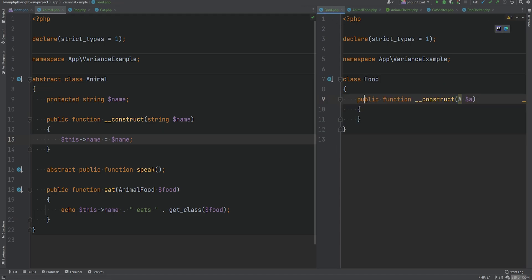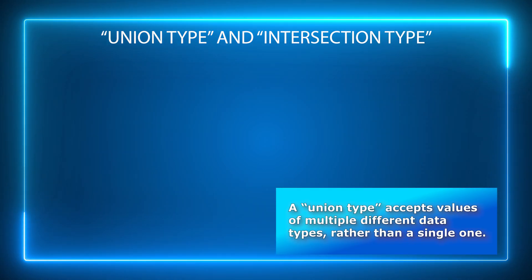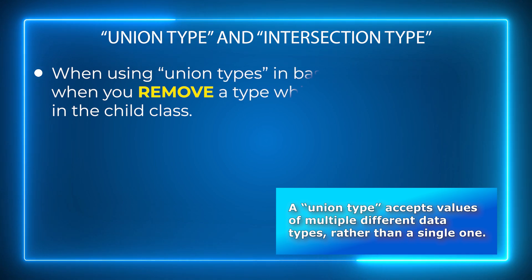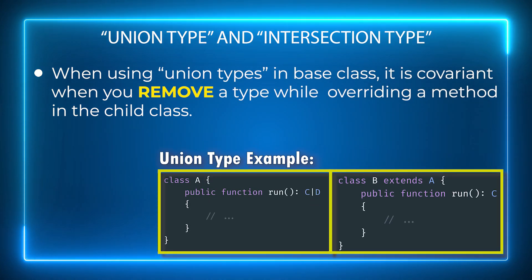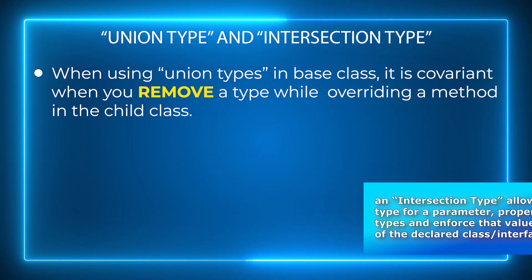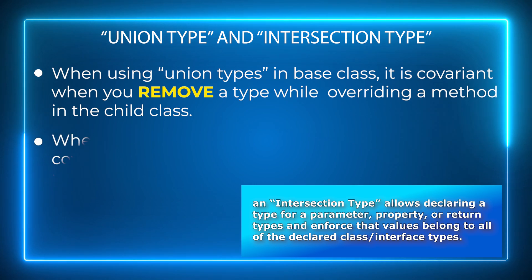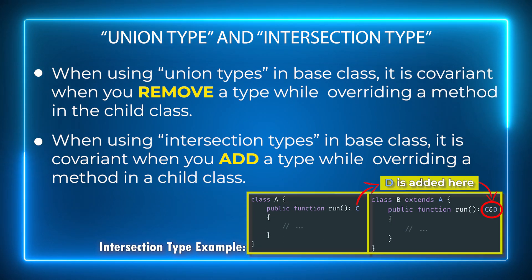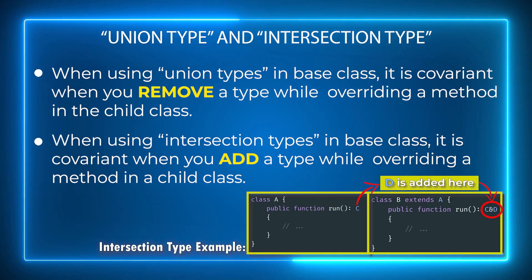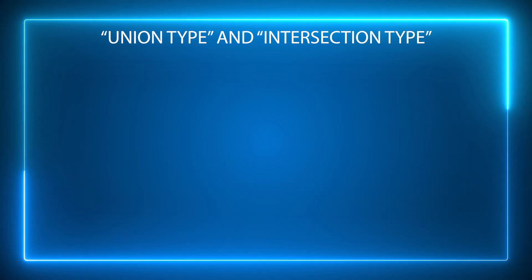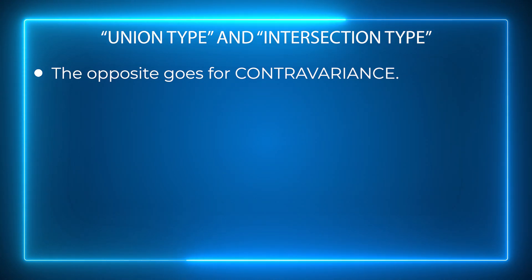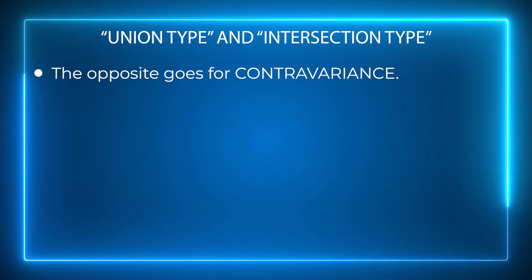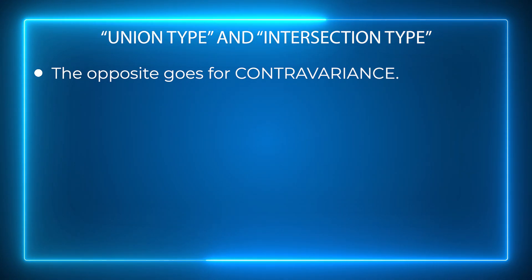Another thing to know involves union and intersection types introduced in PHP 8.0 and 8.1. If you're using union types in a base class and remove a type while overriding a method in a child class, it's covariant because it goes from less specific to more specific. The same applies to intersections, but instead of removing a type, covariance applies when a type is added, since you're narrowing the type. Contravariance is the opposite: adding a union type in an overridden method parameter, or removing an intersection type from an overridden method parameter.